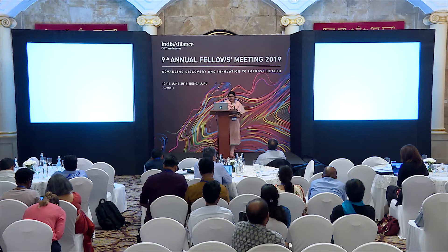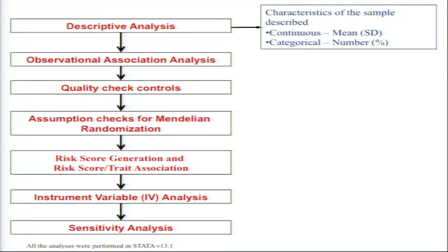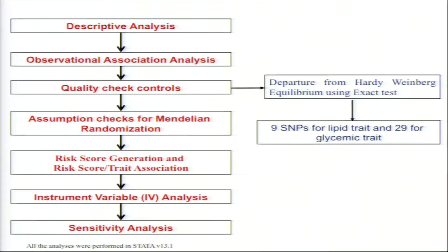For the statistical plan, we first did a descriptive analysis in terms of population characteristics using means, standard deviations, and percentages for categorical outcomes. As a preliminary step we assessed observational associations using mixed linear model rather than simple linear regression because it was a sib-pair design, requiring us to account for family effect. We did a range of quality checks usually done in genetic datasets, including the Hardy-Weinberg equilibrium test. After quality control, we had around 9 SNPs for lipid traits and 29 SNPs for glycemic traits.